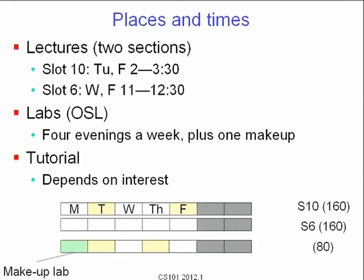Here's the Gantt chart of sorts. Lectures: two sections. Slot 10 — Tuesday, Friday, 2 to 3:30. Slot 6 — Wednesday, Friday, 11 to 12:30, that's where we are. Labs are in the old software lab, that's the basement — the first floor of the Math department building. Four evenings a week, Tuesday through Friday, plus one makeup on Monday evening. If you've lost ground or want to do something extra, you can come on Monday evening and someone will let you in, but there won't be any structured guidance. People with lectures on Tuesdays: half go to lab Tuesday, half on Thursday. People with lectures Wednesdays and Fridays — that's you — half come to lab today and half go on Friday. Rough strength is about 160 per lecture section and 80 per lab section.